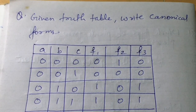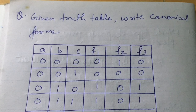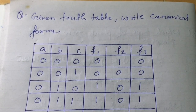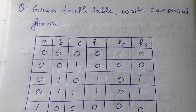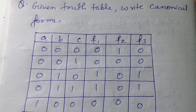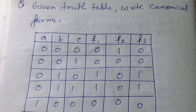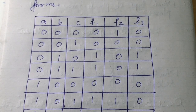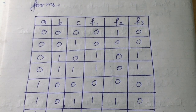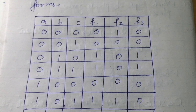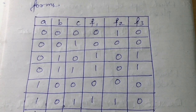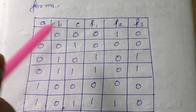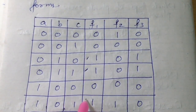Let's look at one more example. A truth table is given with three variables A, B, C and three functions f1, f2, f3, and you have to write the canonical forms for each. For canonical sum of products, we look for min terms — the rows where the function value is 1. For f1, it is 1 at rows 2, 3, 5, and 7.